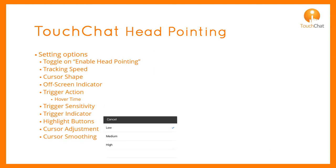Cursor smoothing can be set to low, medium, or high. Smoothing compensates for minor shakiness or tremors to reduce accidental button activations. With a higher cursor smoothing, broad head movement is required. The cursor is less jumpy, but also less responsive.